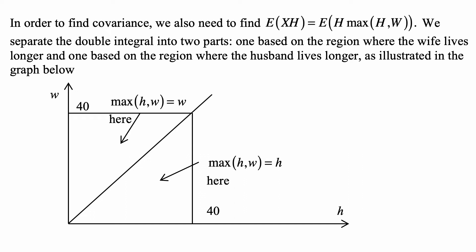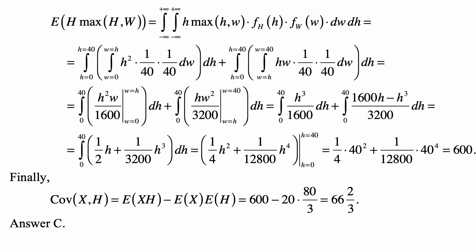And then we work with those two regions. So the expected value of H times maximum of H and W is the integral from minus infinity to plus infinity of the integral from minus infinity to plus infinity of H times maximum of H and W times the density of H times the density of W dw dh.